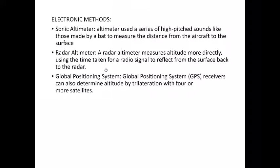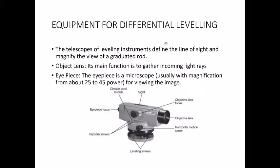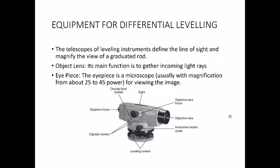Let's come back to the auto level and discuss its different parts. You have the instrument body mounted on a tripod stand. It has an objective lens at the front and an eyepiece at the back — you view from the eyepiece side — and this whole assembly is called the telescope. The objective lens gathers light, and from the eyepiece you get an enlarged view of your leveling staff. The magnifying power of the eyepiece is about 25 to 45x depending on the instrument model.